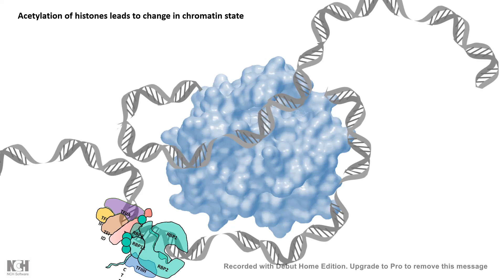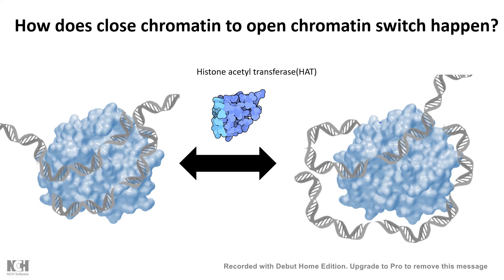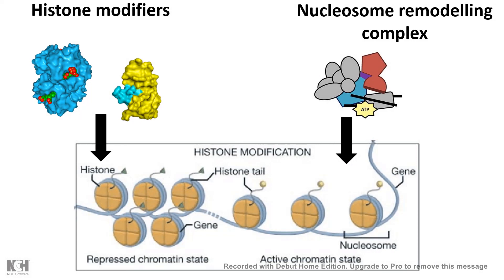How does this chromatin conformation switch take place with histone modifiers like HATs or HDACs? The question is whether these modifiers alone bring about these changes, or is it more complicated? It turns out things are more complicated — along with these modifiers, there are several other players like nucleosome remodeling complexes, which work hand in hand to bring about changes in the chromatin landscape. We'll learn about nucleosome remodeling complexes in a different video, but for now let's focus on histone modifiers — we've already covered histone acetyltransferase and deacetylase, which regulate the acetylation profile on the histone N-terminal tail.